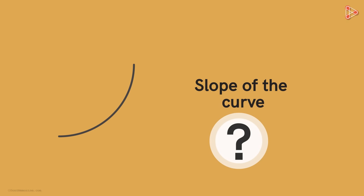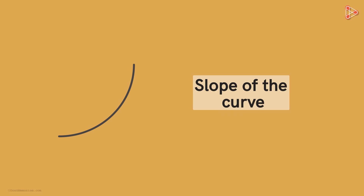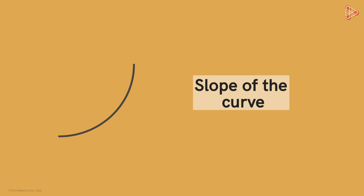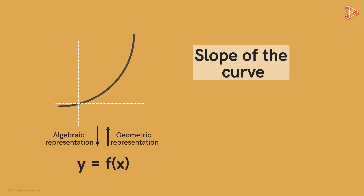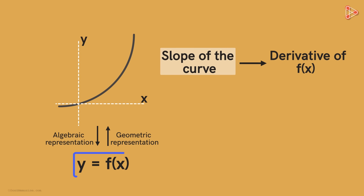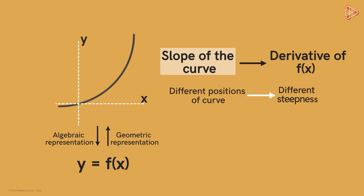Now look at this curve. What is the slope of this curve? Does it even make sense to ask this? In this video, we will understand what this means, and the process of differentiation helps us. We know that such a curve can be represented algebraically by a function between two variables. We will see that this slope is connected to the idea of the derivative of a function. One thing we can clearly see is that different positions of the curve will have different steepness. As we move from the left towards the right along the curve, it gets steeper. So the slope of the curve in general doesn't make sense.